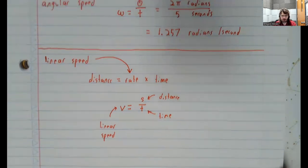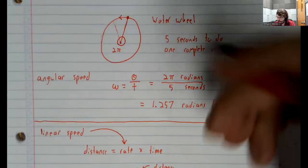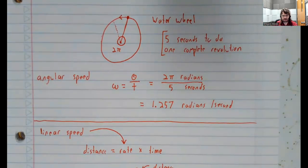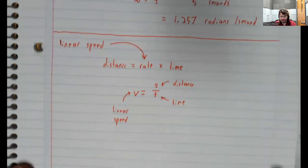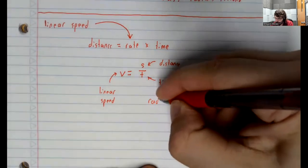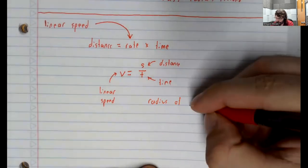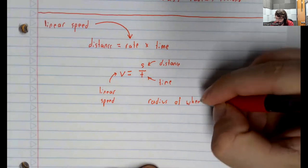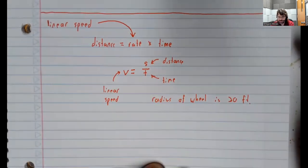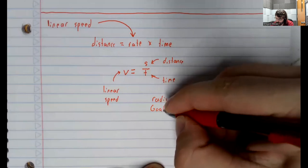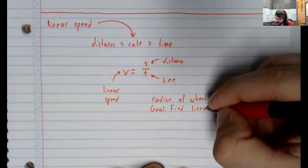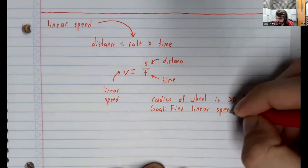Let's do an example. Let's keep the water wheel. And keep the five seconds to do one complete revolution. And let's say the radius of the wheel is 20 feet. And let's find the linear speed.